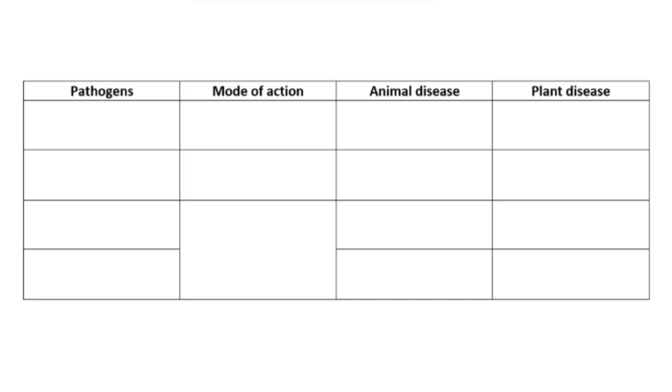In this video we'll be looking at the different types of pathogens and the diseases that they cause. We'll be focusing on how those four pathogens actually make us ill and looking at some examples of how the pathogens can be spread either directly or indirectly in animals and plants.